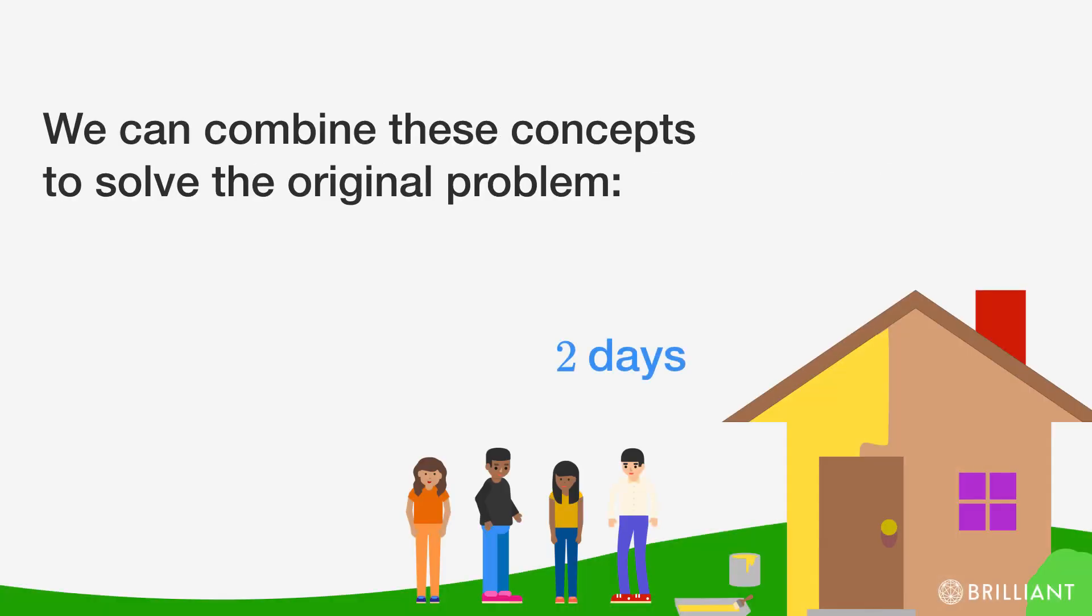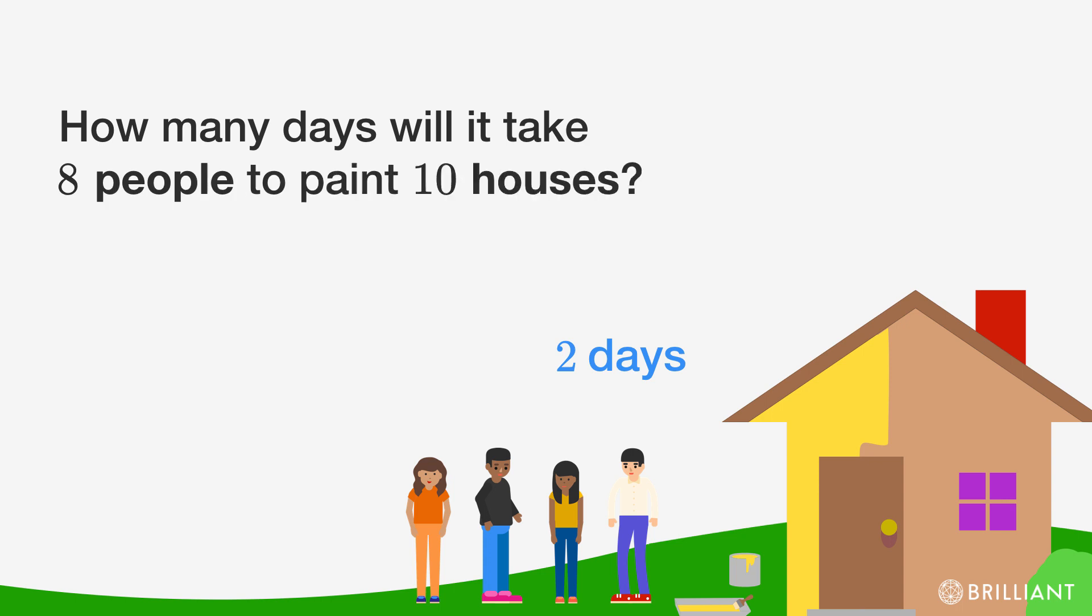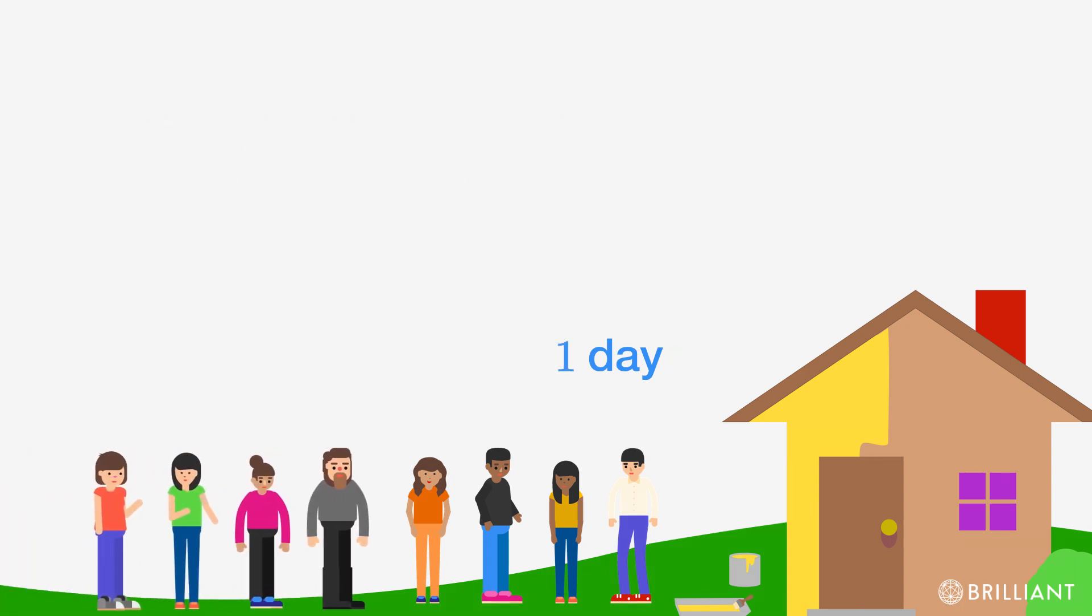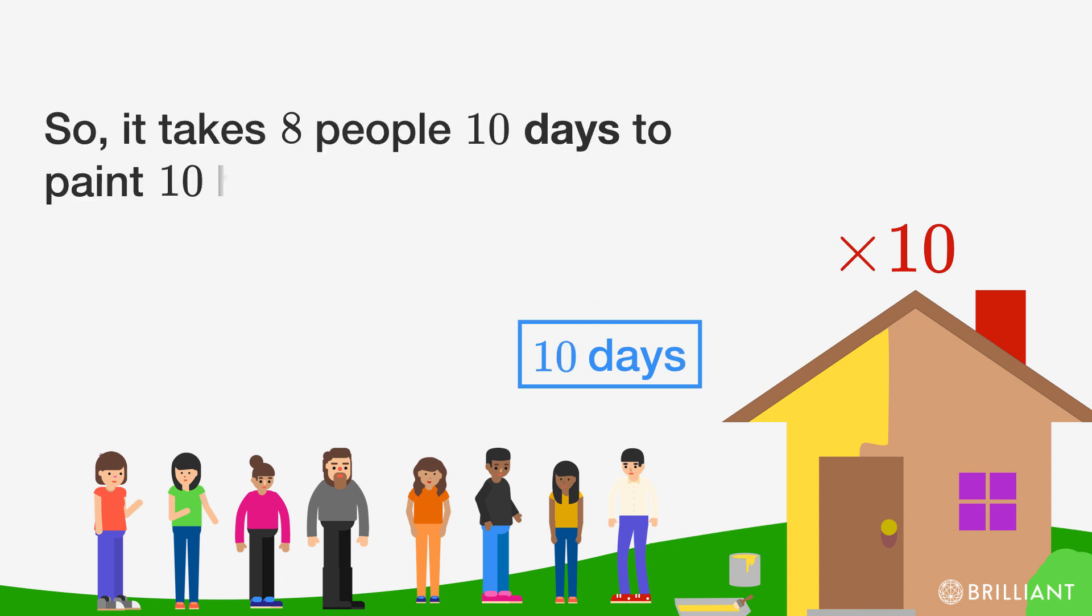We can combine these concepts to solve the original problem. How many days will it take eight people to paint ten houses? First, double the number of people halves the number of days, and then multiplying the number of houses by ten also multiplies the number of days it takes to paint them by ten. So it takes eight people ten days to paint ten houses.